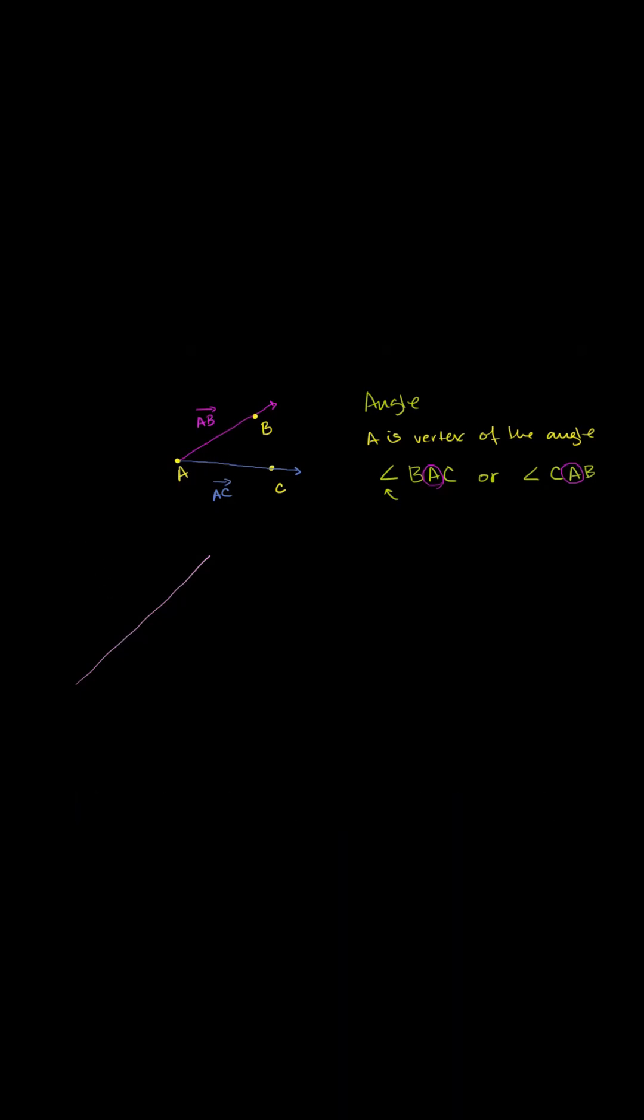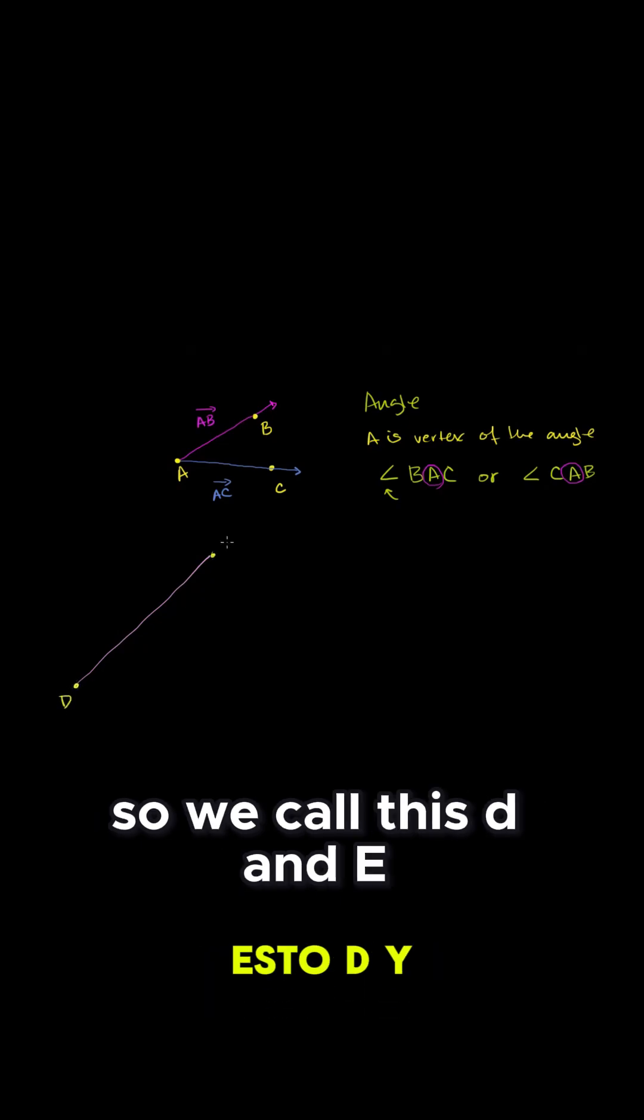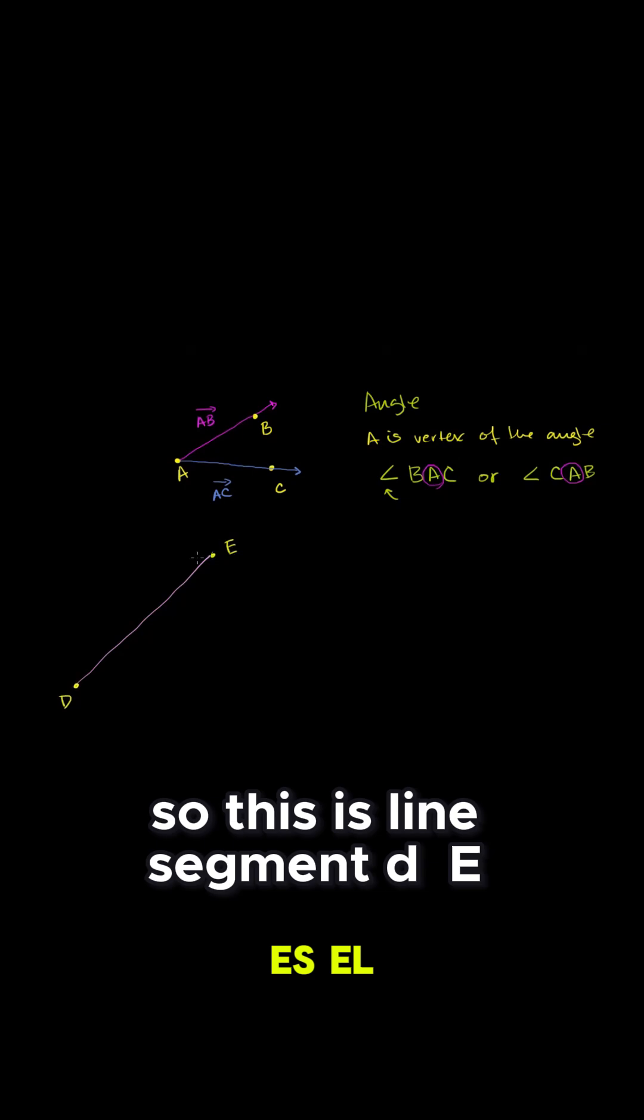But let's say I have one line segment that looks like that. Let me label some points here. So we've already used ABC. So let me call this D and E, points D and E. So this is line segment DE.